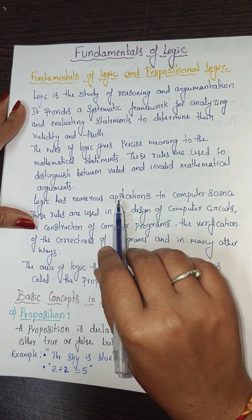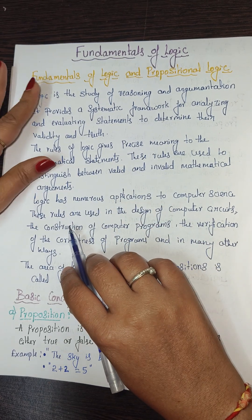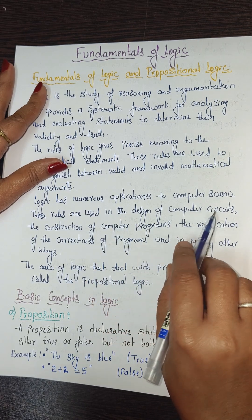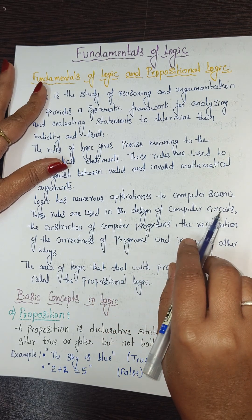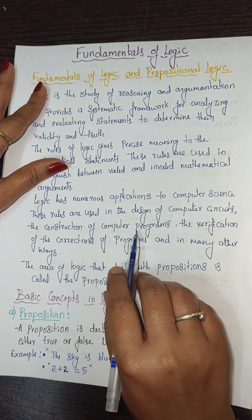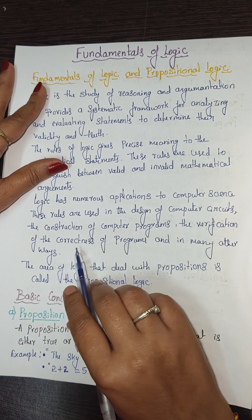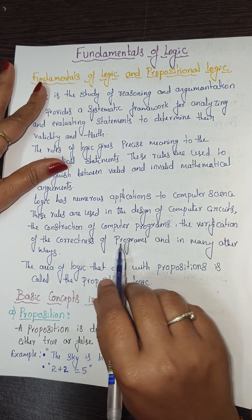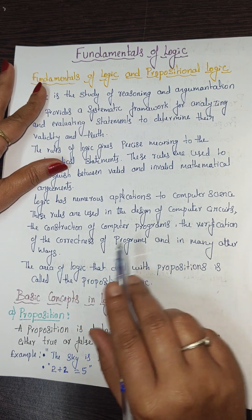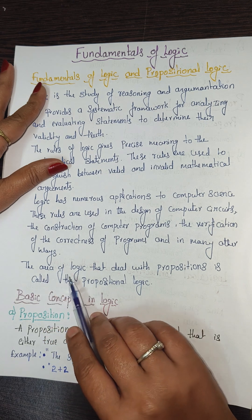Logic has numerous applications to computer science. These rules are used to design computer circuits, for the construction of computer programs, and for the verification of the correctness of programs, and in many other ways.